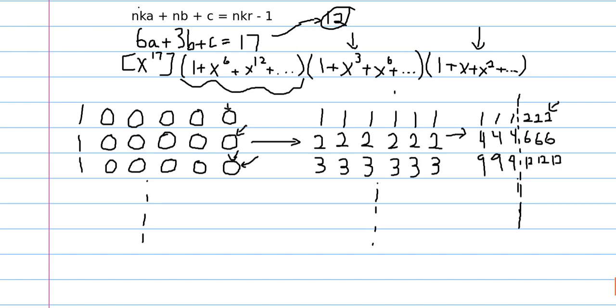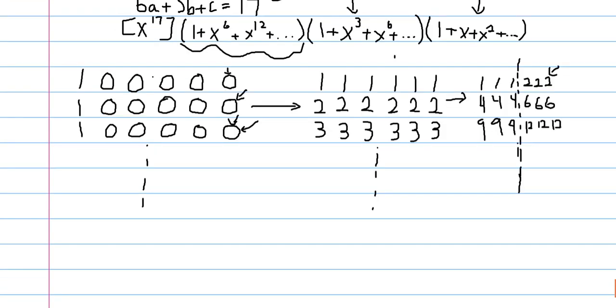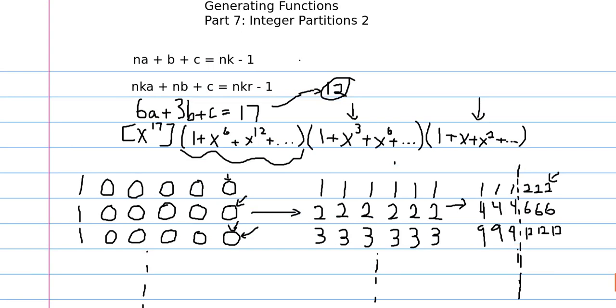And that's where this NK stuff comes in. So if I write it in the format of what I've described here, we have N is 3, so 3, K is 2, so 3 times 2 times A, plus 3B, plus C, is equal to 3 times 2. R is 3. So this evaluates to 17.